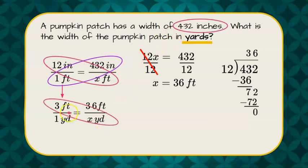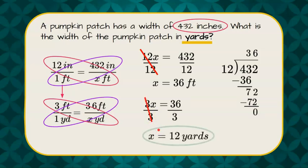Here we have our cross product property: 3 times x equals 1 times 36. Divide both sides by 3 and x equals 12 yards.